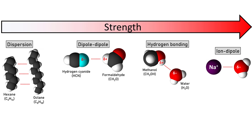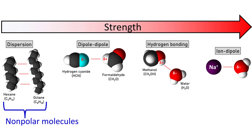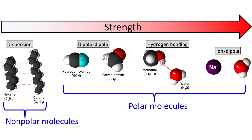The four types of intermolecular forces can be arranged in order of increasing strength: ion-dipole forces are the strongest and dispersion forces are the weakest. Between non-polar molecules, the strongest possible attractions are dispersion forces, which are relatively weak. Polar molecules, however, may experience dipole-dipole forces, hydrogen bonding, or ion-dipole forces, depending on the exact nature of the molecules.